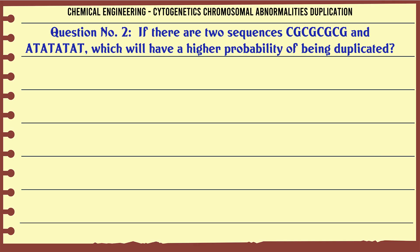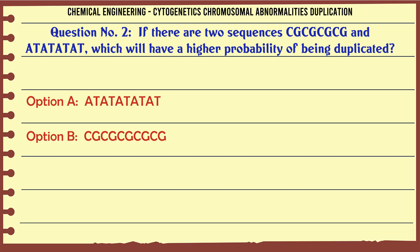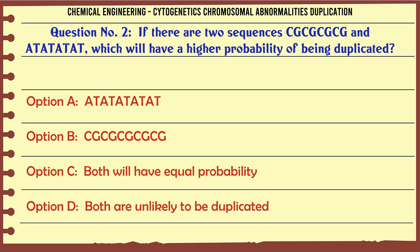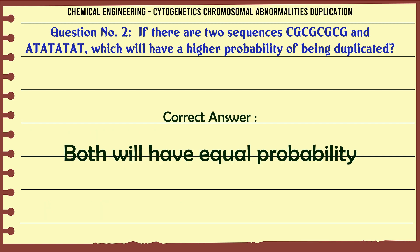If there are two sequences CgCgCgCg and ATATAT, which will have a higher probability of being duplicated? A: ATATAT. B: CgCgCgCgCgCg. C: Both will have equal probability. D: Both are unlikely to be duplicated. The correct answer is: both will have equal probability.